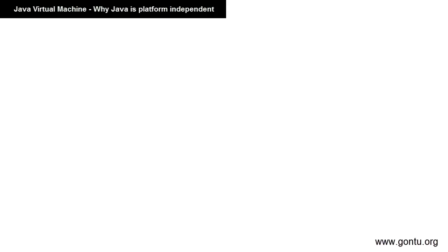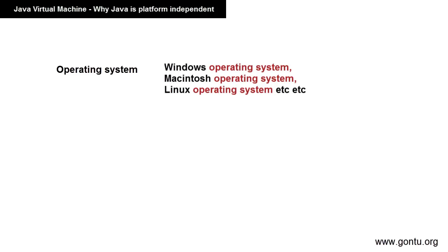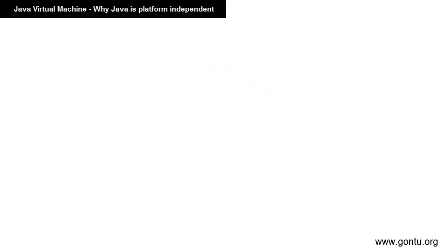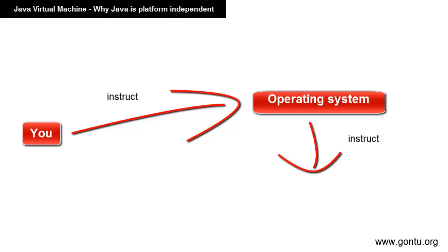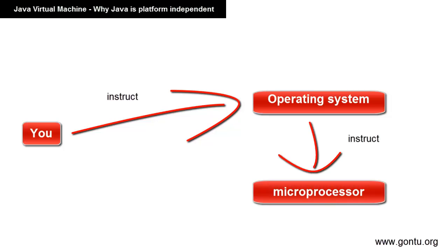A microprocessor is controlled by a big program called an operating system — for example, Windows, Mac operating system, Linux operating system, etc. What you see on your computer screen is the operating system program. You instruct your operating system to perform a certain task, and then the operating system further instructs the microprocessor to run the programs which are needed to perform that task.